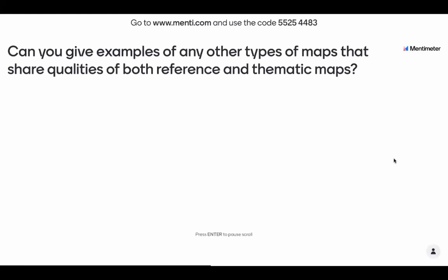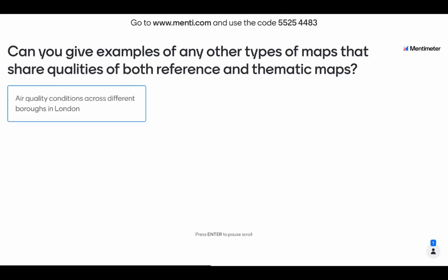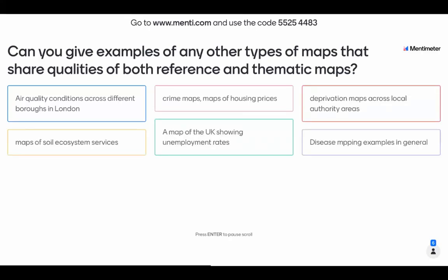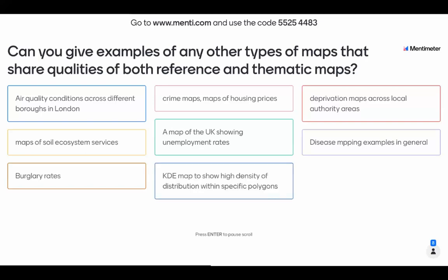Can anyone give examples of maps that might share qualities of both reference and thematic maps? Air quality conditions across different boroughs in London — great example, because placing those boroughs would be a reference map, but using them to examine air quality conditions then becomes thematic as we're studying something spatially. Crime maps and maps of housing prices are great examples too — you could use crime maps to analyse where crimes are most prevalent in order to reduce crime or amend policy, which is a great example of a thematic map. Deprivation across local authority areas is another strong example, which we'll be exploring tomorrow with the census data.